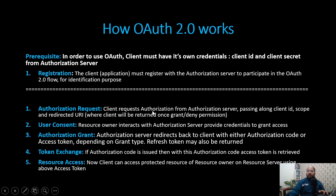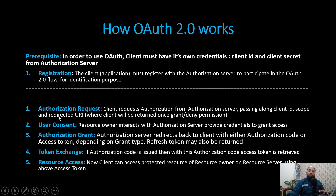Now we are going to make a request to the authorization server from the client — that is, the third-party application. We'll be passing the client ID, which we got from the authorization server, we'll be passing the client secret, we'll be passing the scope meaning which type of access we need, and we'll be passing one parameter that is redirect URI. The redirect URI is where we fall back after grant or denial. When we discuss the practical demonstration, you will understand this better.